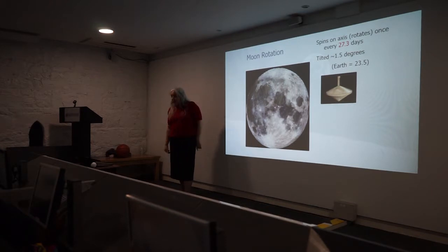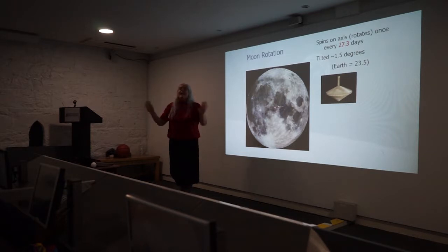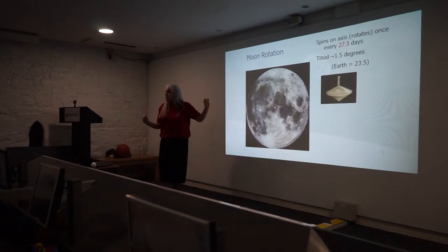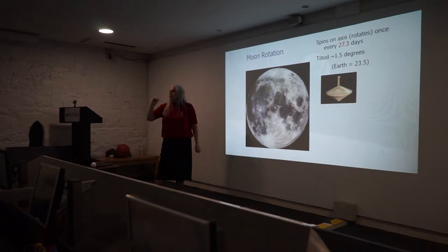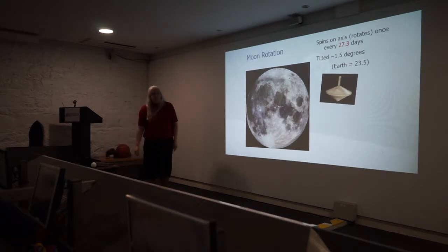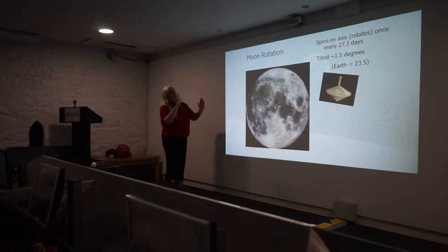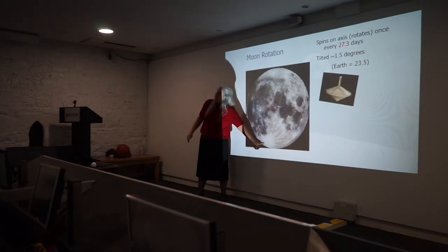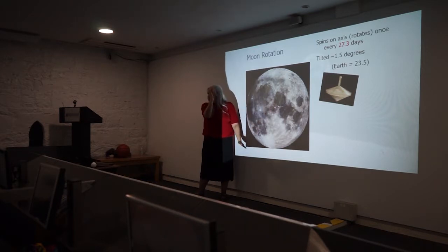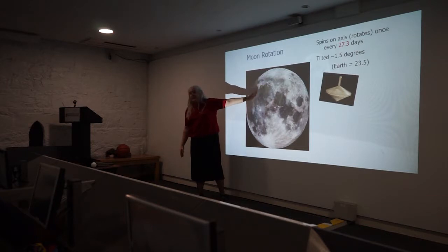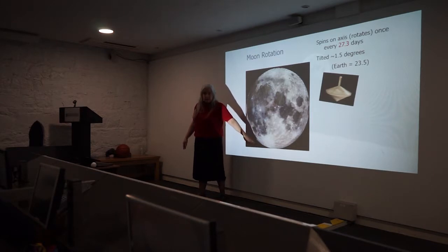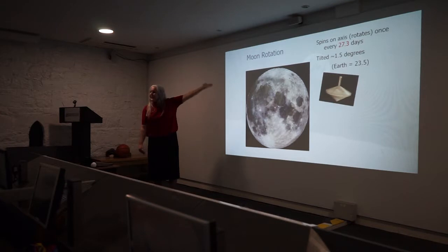The moon goes around the Earth roughly once a month. Don't panic about the precise days — 27.3 sidereal versus 29.5 synodic would be a brutal question given they are different types of measurement. The Earth is tilted 23.5 degrees; the moon is tilted about 1.5 degrees. With that slight tilt we do sometimes see a little extra at the north or south, but it's not enough to give seasons on the moon.